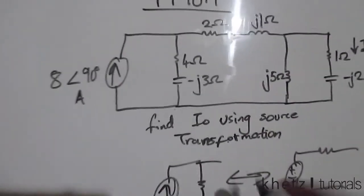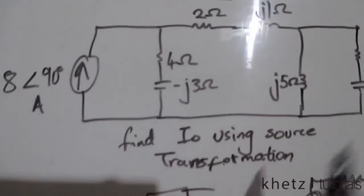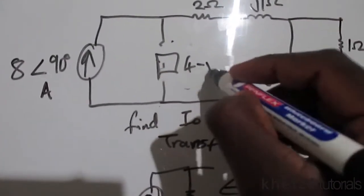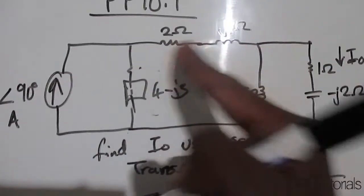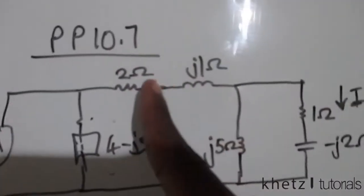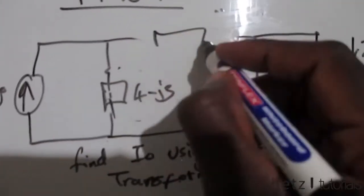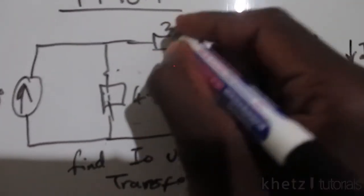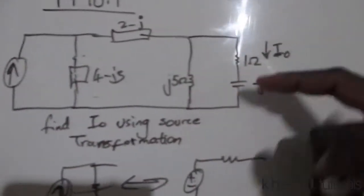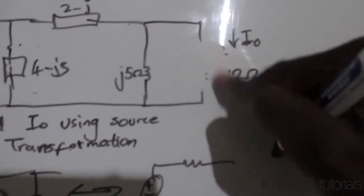Let's start. Starting here, we can combine these two into a single impedance of 4 minus j3. The same applies here — we can combine these two into a single impedance of 2 plus j1. And here we have 1 minus j2.